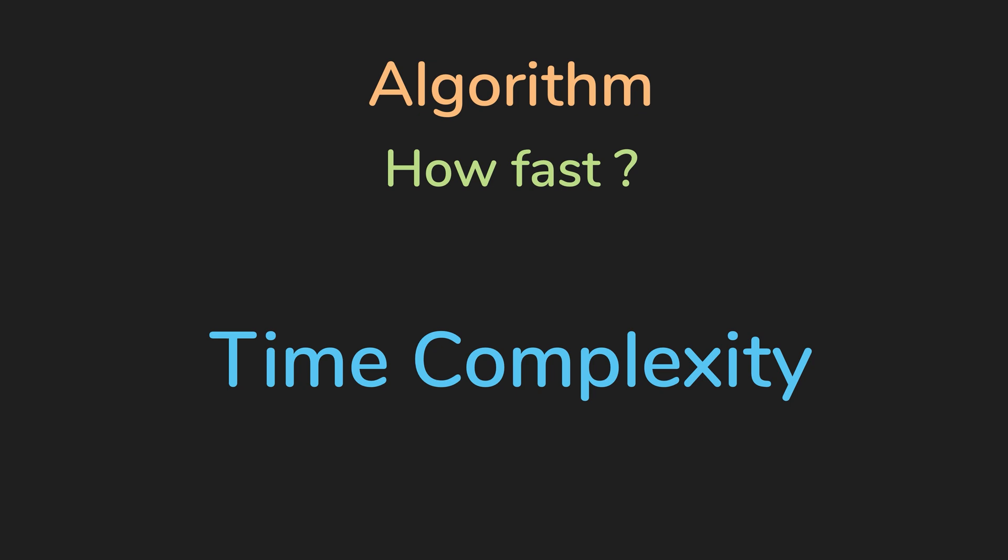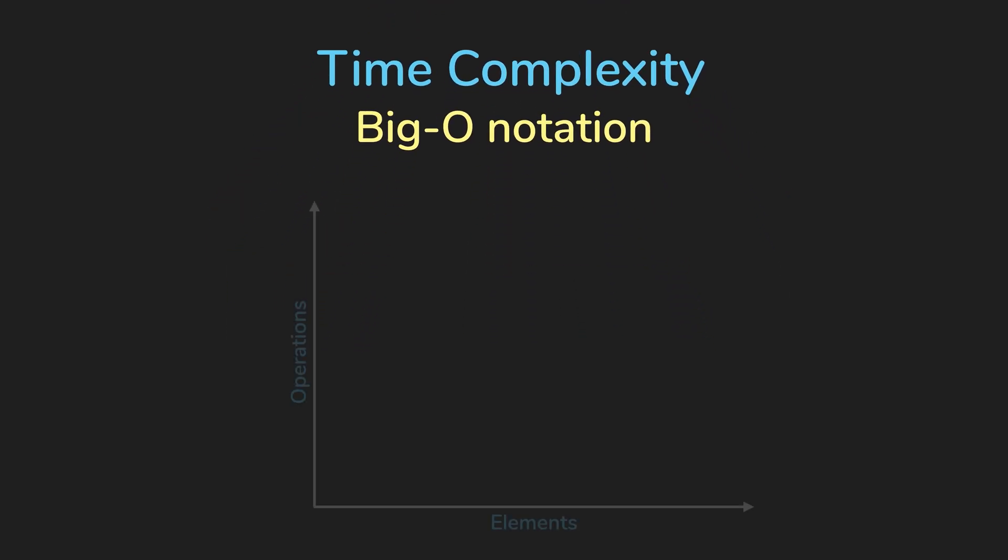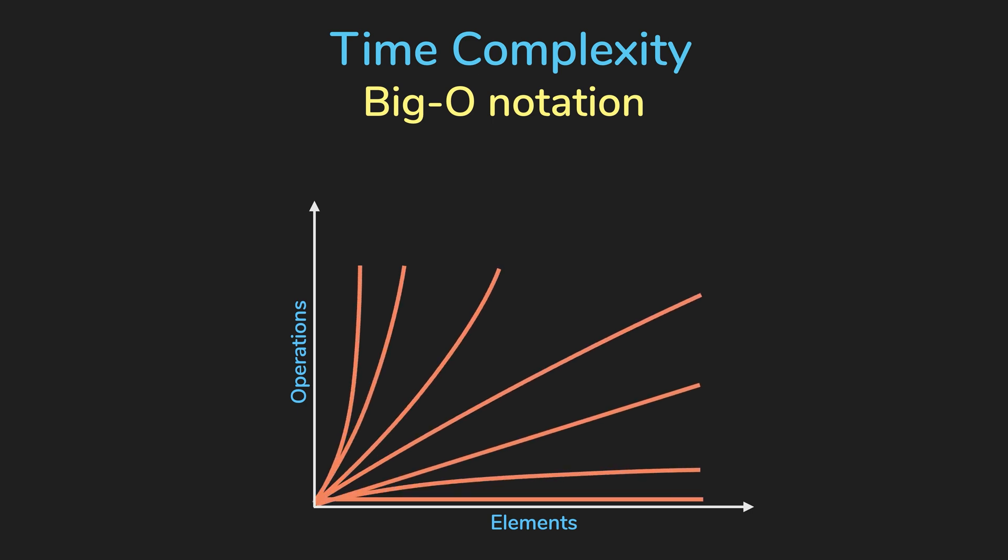Time complexity is often expressed with big O notation. The big O is used to classify algorithms by how it behaves as the input size increases.